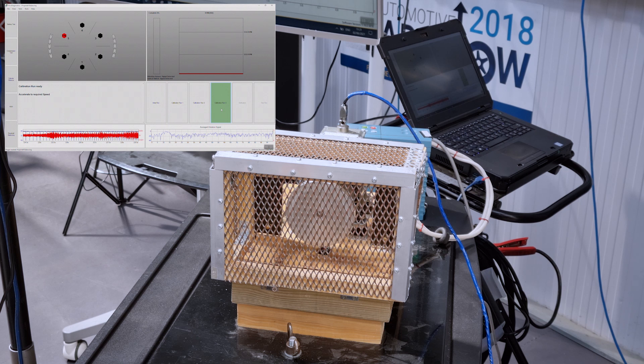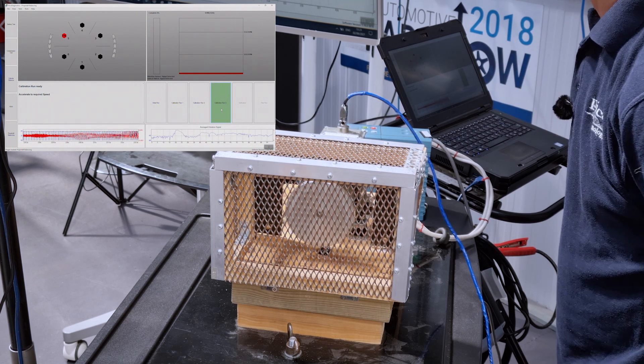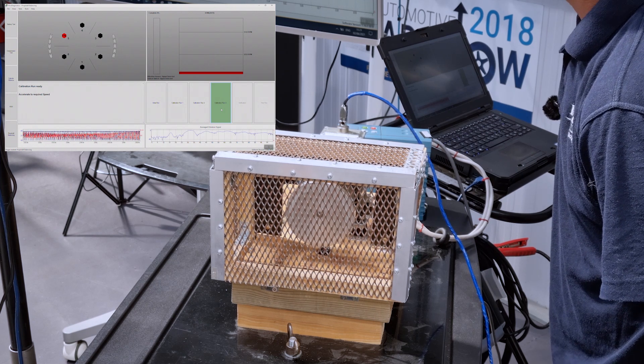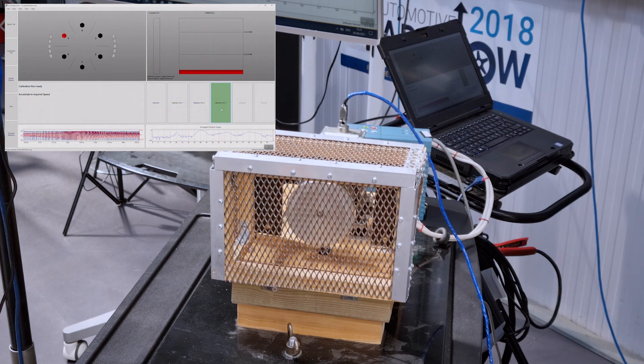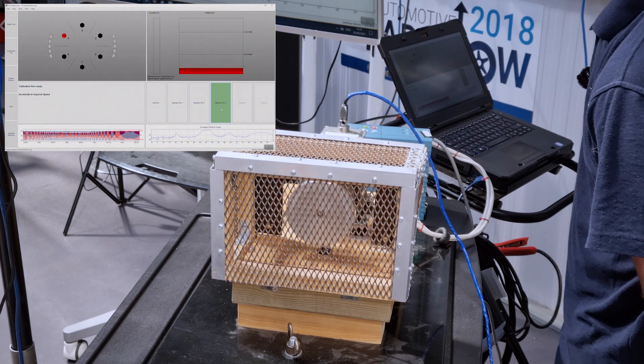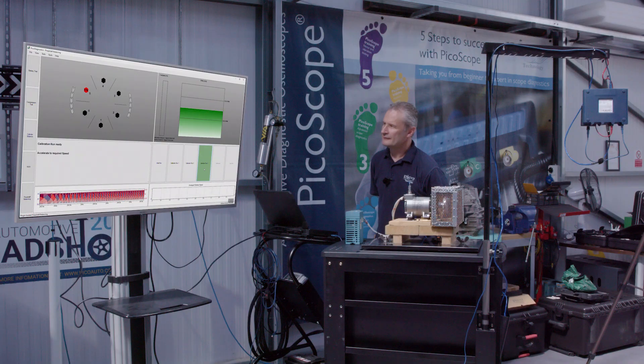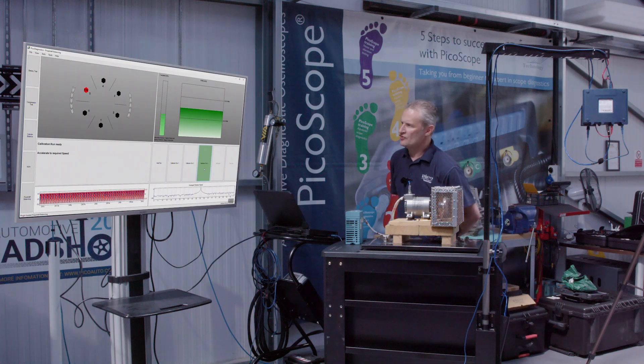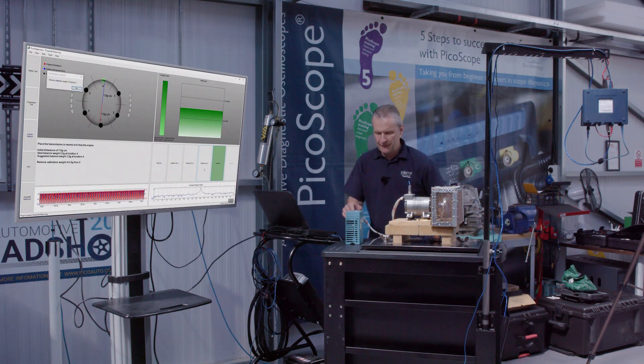Click on calibration run three and run the shaft. After this final measurement, we'll actually know where to place our trial weight to improve balance. In the sweet spot again. And the measurement can be taken whilst we're in that window. There we go.